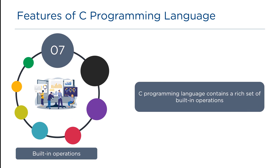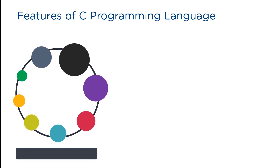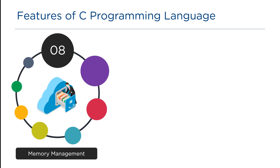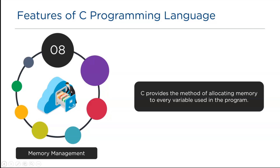C language contains a wide range of built-in operators that are used for different scenarios, such as arithmetic operators, relational operators, logical operators, bitwise operators, and many more. Lastly, C introduced several memory management functions within the standard library header file, and they take care of allocating, deallocating, and reallocating the memories in C.